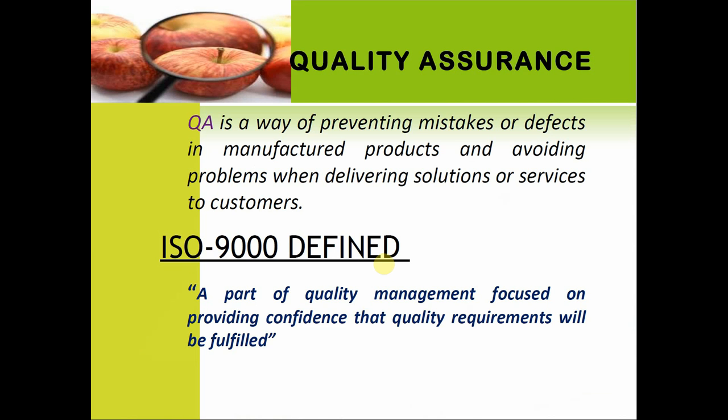Quality Assurance is a way of preventing mistakes or defects in manufactured products and avoiding problems when delivering solutions or services to customers. ISO 9000 defines Quality Assurance as a part of quality management focused on providing confidence that quality requirements will be fulfilled.